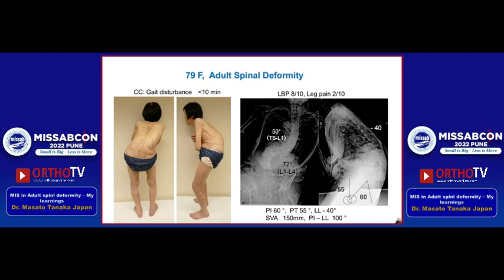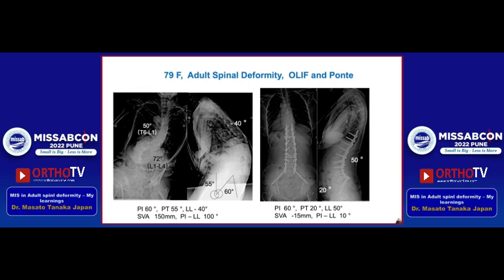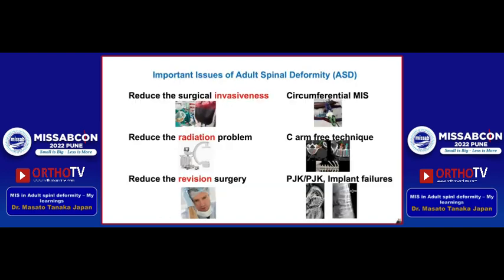This is a 79-year-old female with adult spinal deformity. You can see very severe malalignment. We have a lot of this kind of elderly patient because in Japan we are now suffering a graying of the society. Today, I'd like to talk about these important issues of ASD.